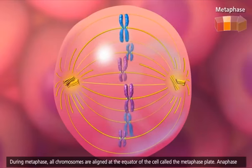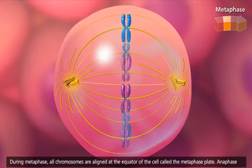During metaphase, all chromosomes are aligned at the equator of the cell, called the metaphase plate.